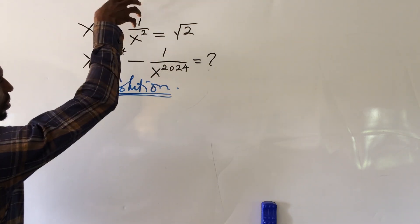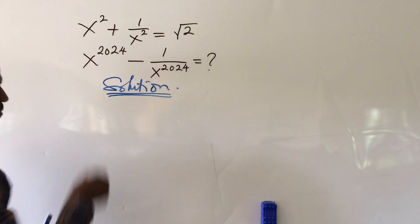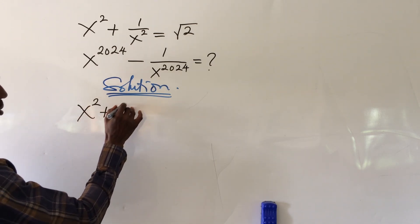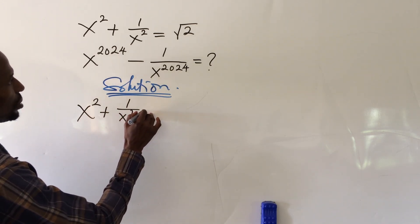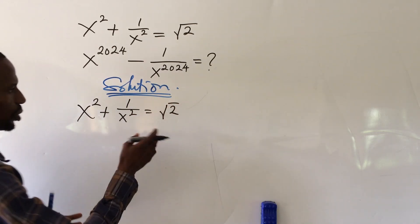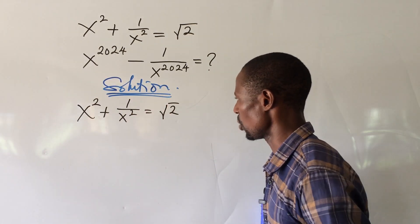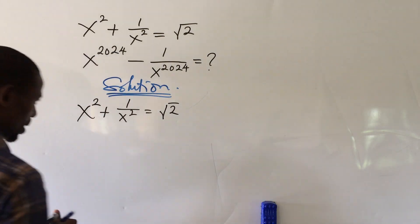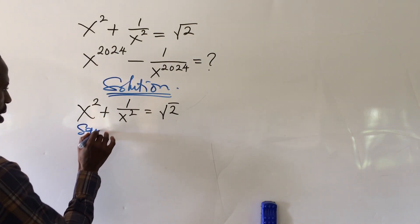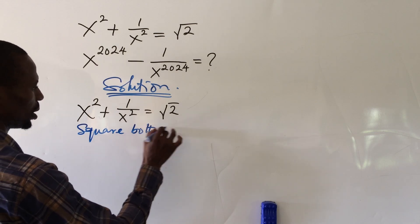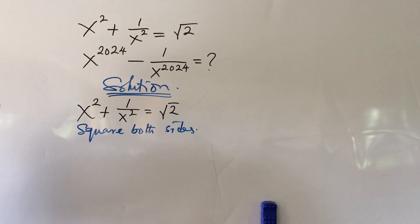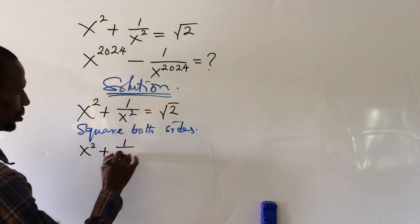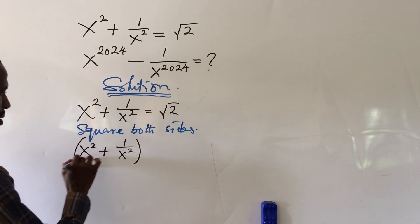We are dealing with this equation which reads: s to the power of 2 plus 1, all over s to the power of 2, equal to root 2. What we do to handle this radical — to eliminate it — is to square both sides of the equation. So we have: s to the power of 2 plus 1, all over s to the power of 2, quantity squared.